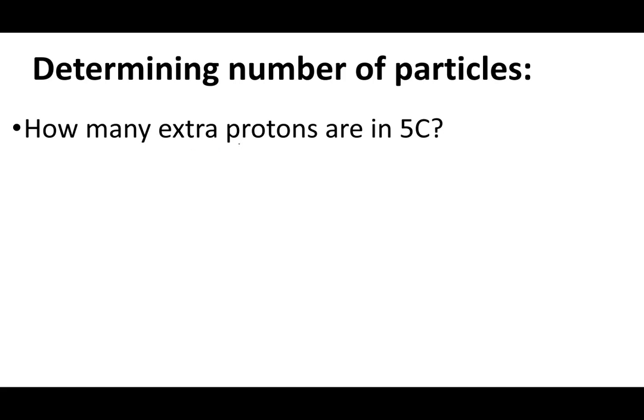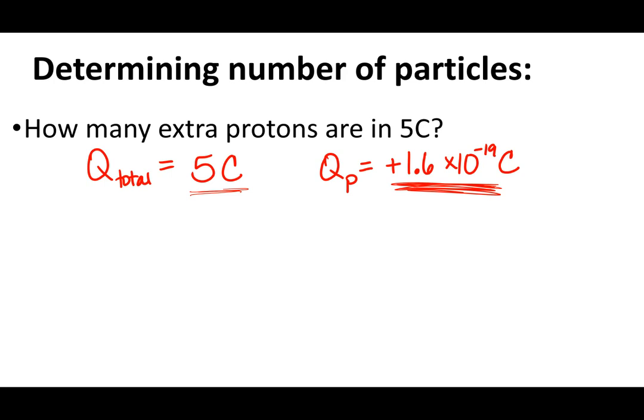Now let's figure out how many extra protons are in 5 coulombs. So now I know the total charge. The total is 5 coulombs. I know that the charge of one proton is positive 1.6 times 10 to the negative 19 coulombs. So the question is how many protons are in 5? Well, one proton is this much. This is our total. So the question is how many of these will fit in this? Well, we would divide it. Q total would be QP times the number of protons.